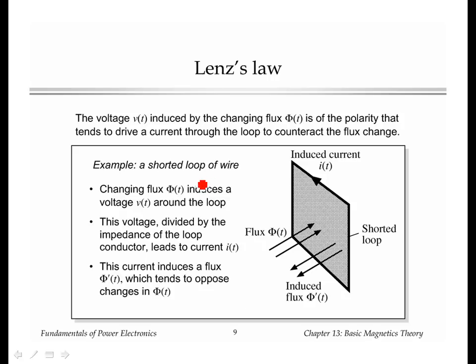Lenz's law says that if we take the same loop and short it, a second ago we had these conductors coming out and we measured a voltage, now we're going to short the conductors. What Lenz's law says is that if you have some flux passing through the interior of this loop and the flux changes, then that flux will induce a current around the shorted loop that will act in a way to counteract the changing flux.